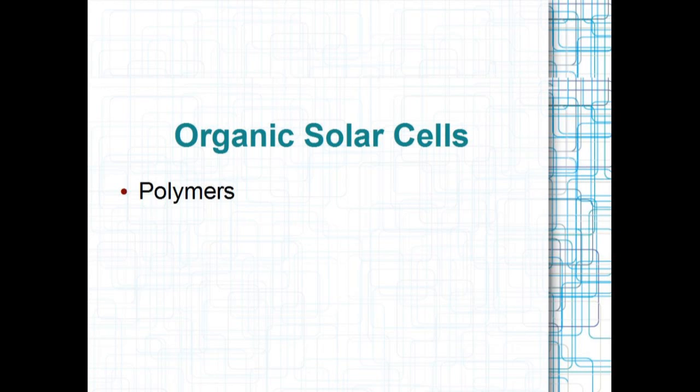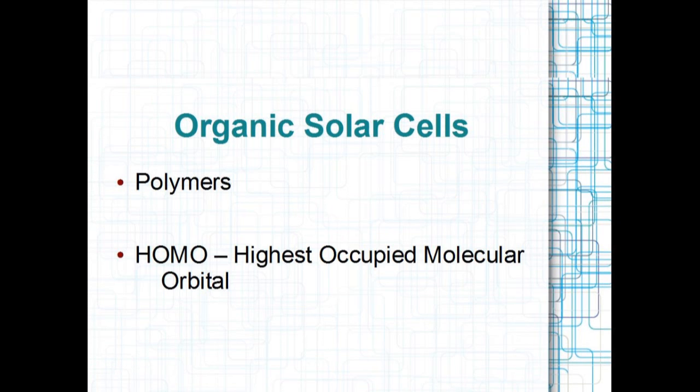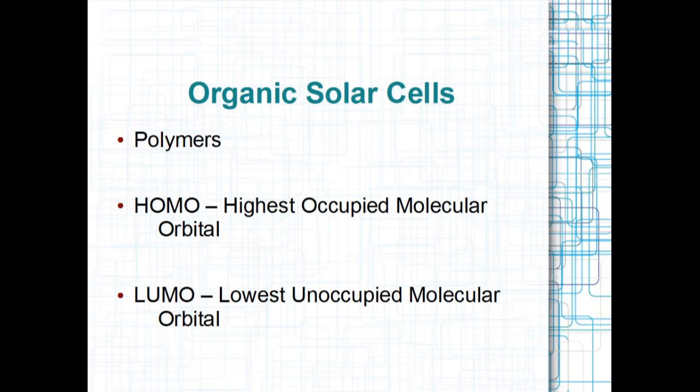Normally, electrons fill the lowest energy levels, the highest of which is called the highest occupied molecular orbital, or HOMO. This can be compared to the valence band. When an electron gains energy, it is excited to the equivalent of the conduction band, called the lowest unoccupied molecular orbital, or LUMO.